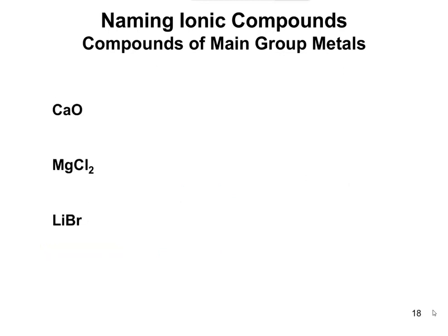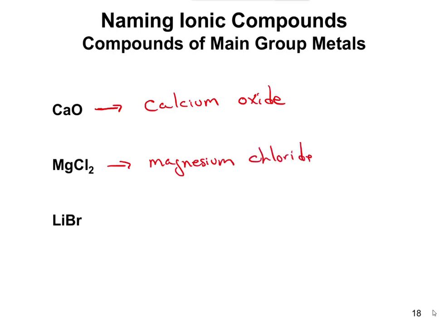Let's do a couple of practice problems. CaO is simply calcium oxide. MgCl₂ is magnesium chloride — the same example from the previous slide. LiBr is lithium bromide. We're naming the cation, then naming the anion. Notice the ending of all the anions has the -ide suffix. We always name the metal first, and then the non-metal comes second with the ending -ide.